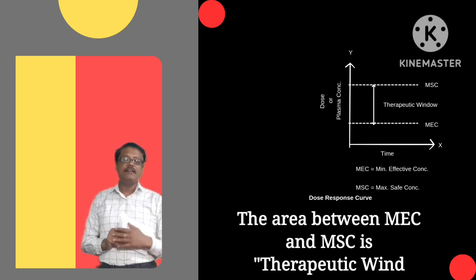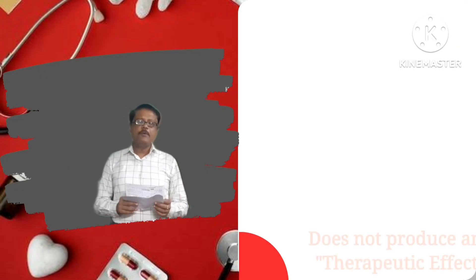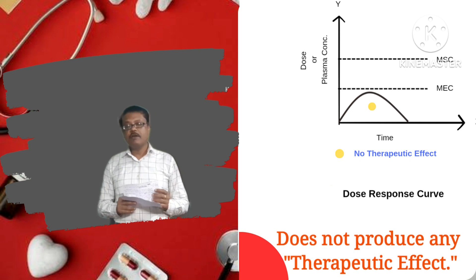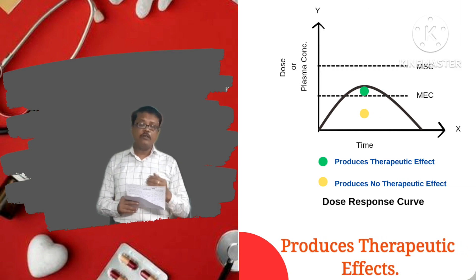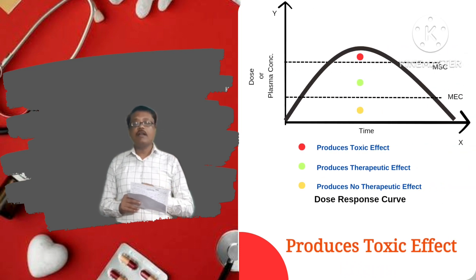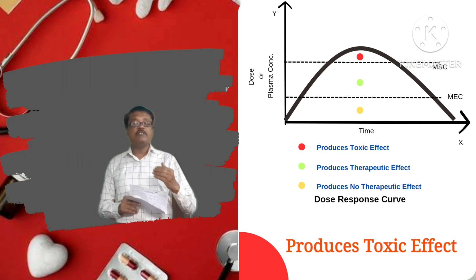The area between MEC and MSC produces the therapeutic window. At a minimum dose, when the dose response curve falls below the MEC threshold line, it does not exhibit any therapeutic effect. When the curve crosses the MEC line and falls within the therapeutic window, it shows a therapeutic effect in the patient's body. When the curve crosses the MSC threshold line, the area beyond it exhibits a toxic effect.